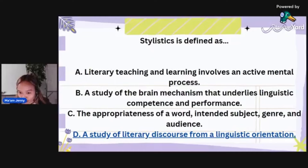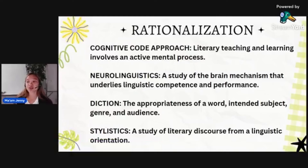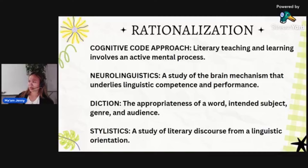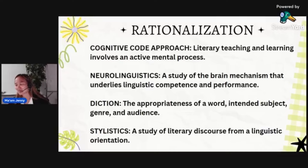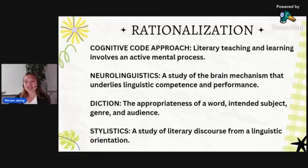Regarding multiple intelligences — that's Howard Gardner — different people have different intelligences: some are strong in music and aesthetic, others in logical or linguistic intelligence. Those with linguistic intelligence can speak multiple languages. Letter C — the appropriateness of a word for the intended subject, genre, or audience — that is diction. And letter D is stylistics: a study of literary discourse from a linguistic orientation.